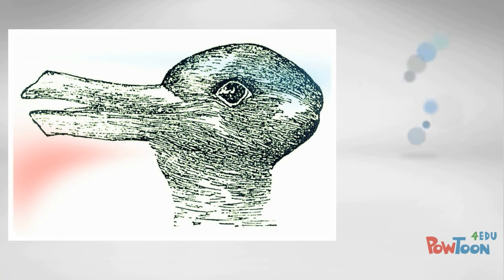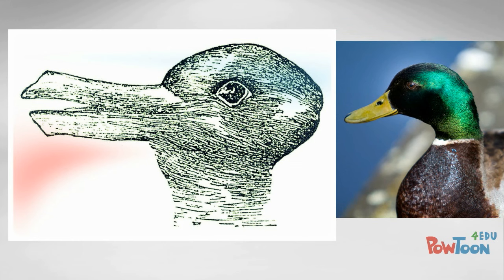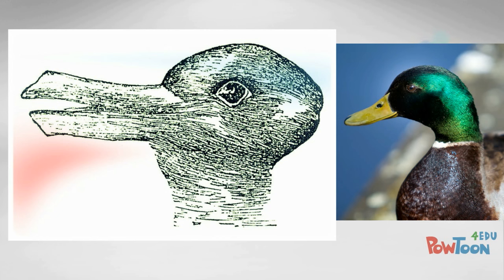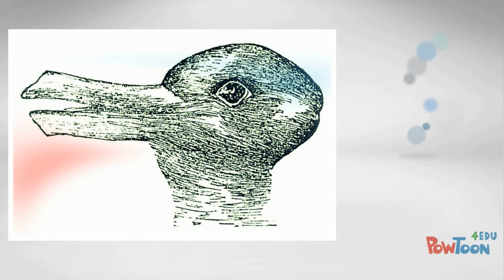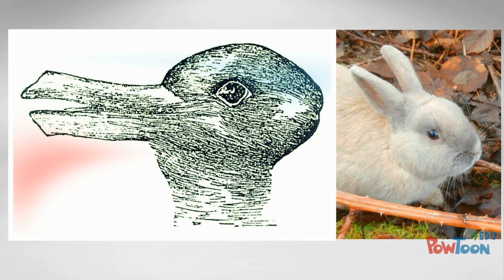Here's another image — a famous image of one of two things for most of us. Do you see the duck? If you see the duck, you see a beak pointing to or facing the left of your screen, and you see the duck's head and neck. Can you see a bunny rabbit? If you see a bunny rabbit, the bunny rabbit's mouth is facing the right of your screen with its ears pointed behind it to your left. If you can switch between both perspectives, you are exercising cognitive flexibility.